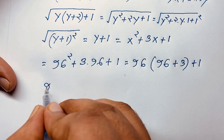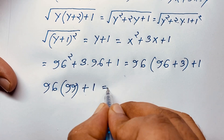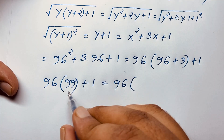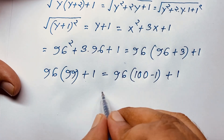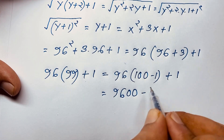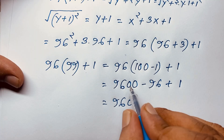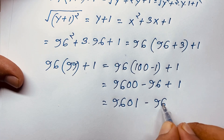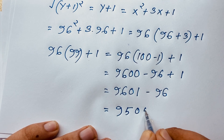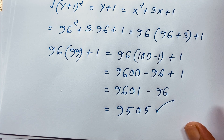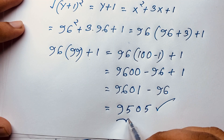Now computing: 96 times 99. We know 99 equals 100 minus 1, so 96 times 99 equals 9600 minus 96, which equals 9504. Adding 1 gives us 9505. This is our final answer for this square root math problem: 9505.